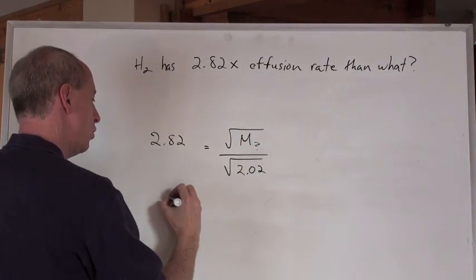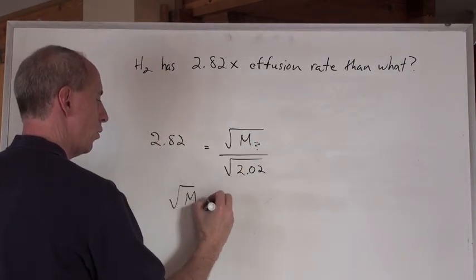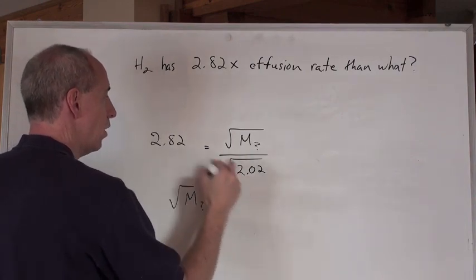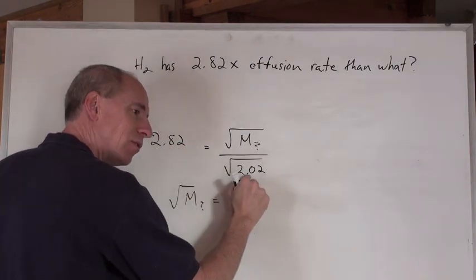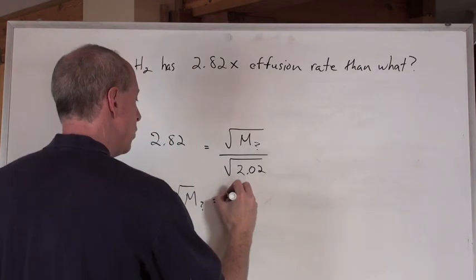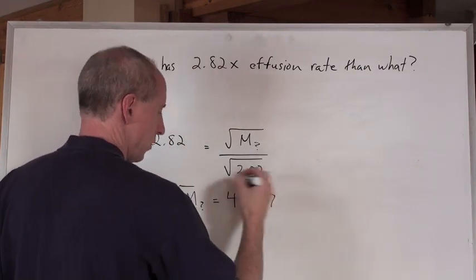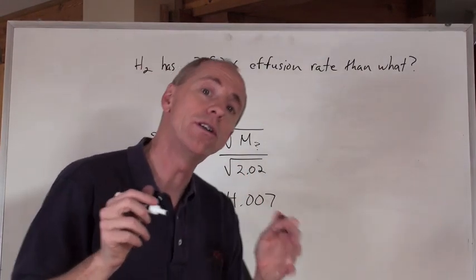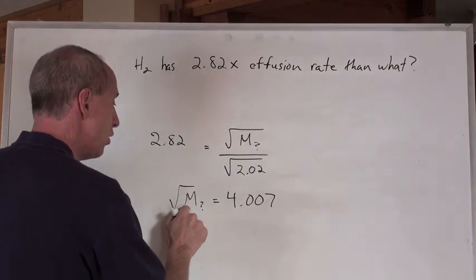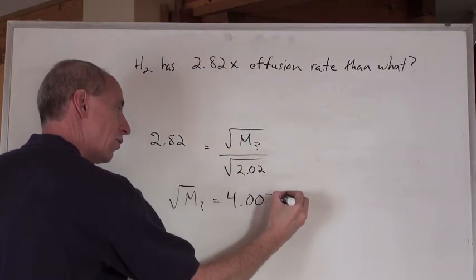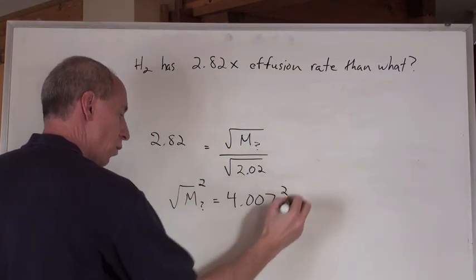So now to solve for this, you know that the square root of that unknown right there is going to be equal to 2.82 times the square root of 2.02, which is 4.007 or something close to that. In order to get that right there, you've got to square both sides, right? You square that, you square that...